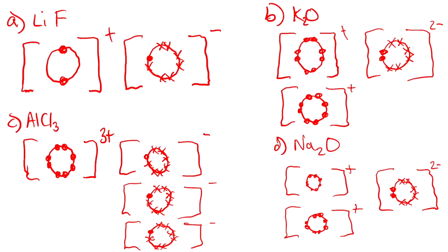You've now learned about ionic bonding — what it is and how to represent it with a dot and cross diagram. You can test yourself using the quiz and answer exam questions on the topic. If there's anything you need help with, please get in contact with one of our tutors who will be happy to help.